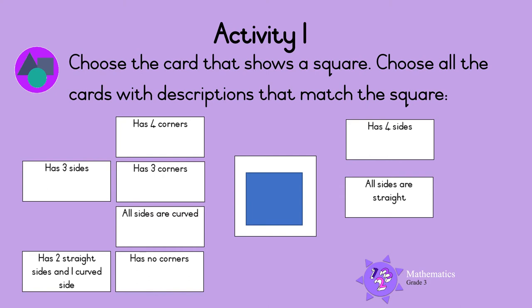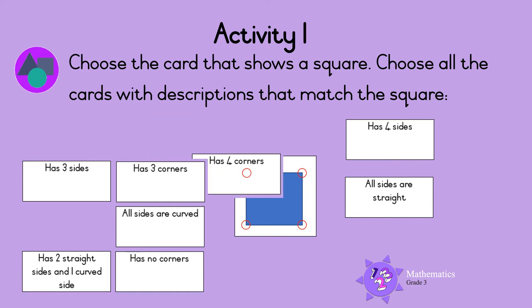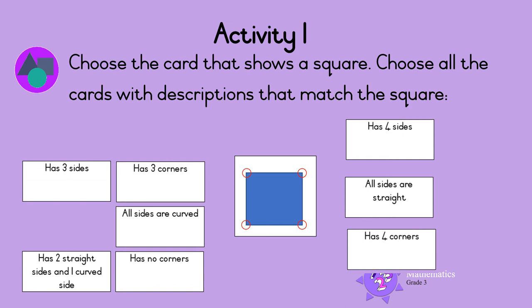Now count the corners. How many corners does the square have? Let's count: 1, 2, 3, 4. So a square has 4 corners. This square has 4 sides, all the sides are straight, and it has 4 corners.